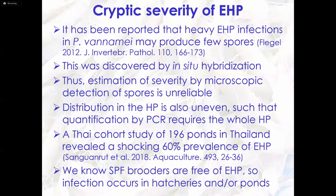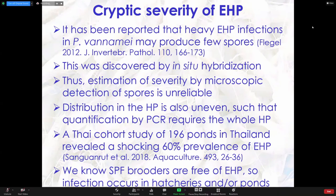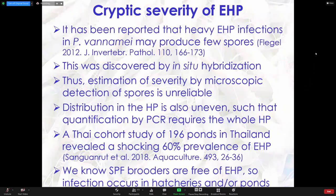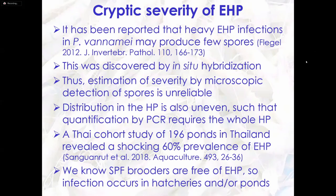We conducted a big study of ponds in Thailand in the years before 2018 and were really shocked to find a 60% prevalence of EHP in Penaeus vannamei culture — totally unexpected. We know that SPF shrimp are free of EHP, so the infection occurs in the hatcheries after they get the SPF brooders, or also occurs by environmental contamination in the ponds.